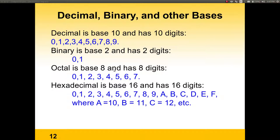In octal, we use the symbols 0 through 7. And in binary, as already mentioned, it uses only two digits: 0 and 1. So basically, the number of digits used in a base is equal to the total number of digits, starting from 0, all the way up to the base value minus 1.